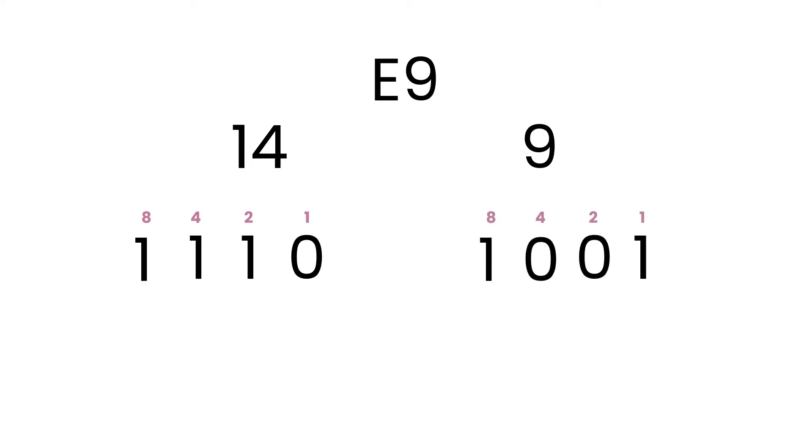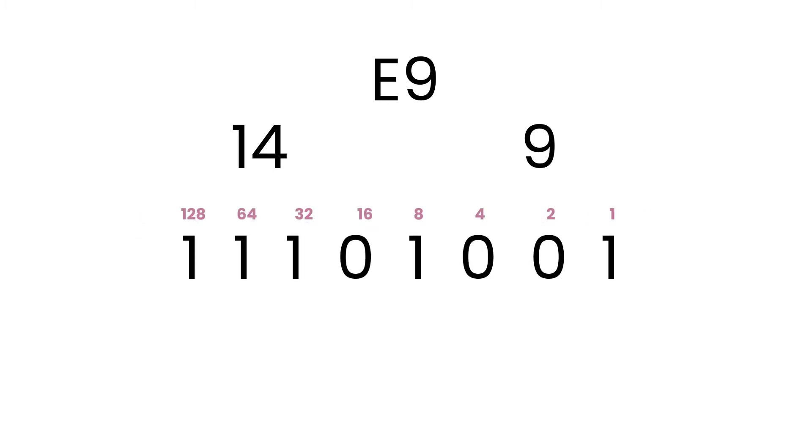Now let's say we have a hexadecimal value and want to work out the decimal equivalent. The easiest approach is to convert to binary first. We split our hexadecimal number into its individual digits and convert each one to a binary nibble. The binary for E, or 14 in decimal, gives us 1110, and 9 gives us 1001. We concatenate these nibbles together to get 11101001, then add the binary column values from left to right — which shows us that E9 in decimal is 233.